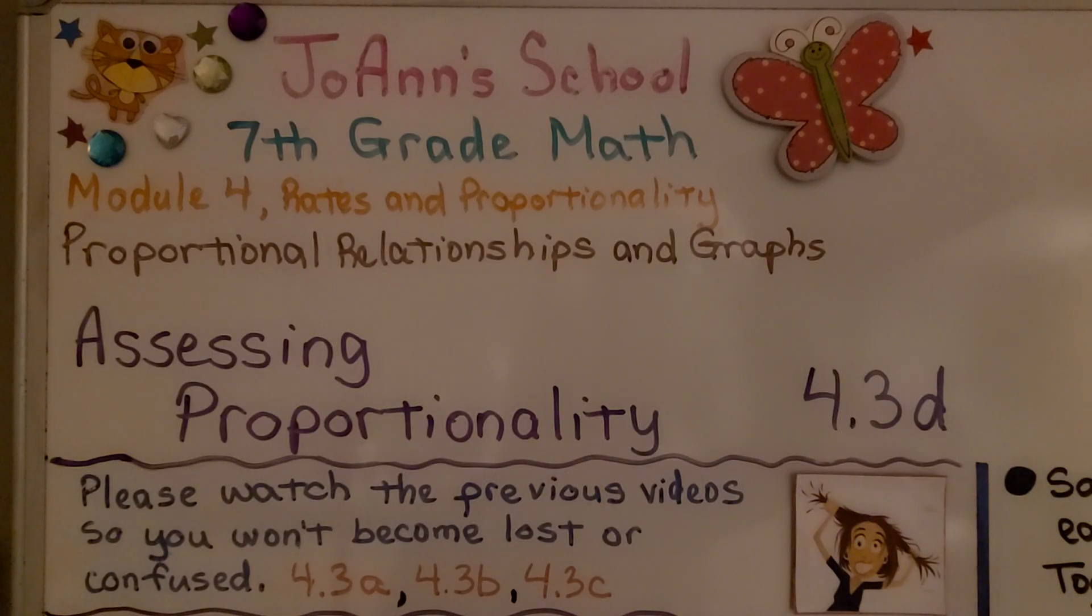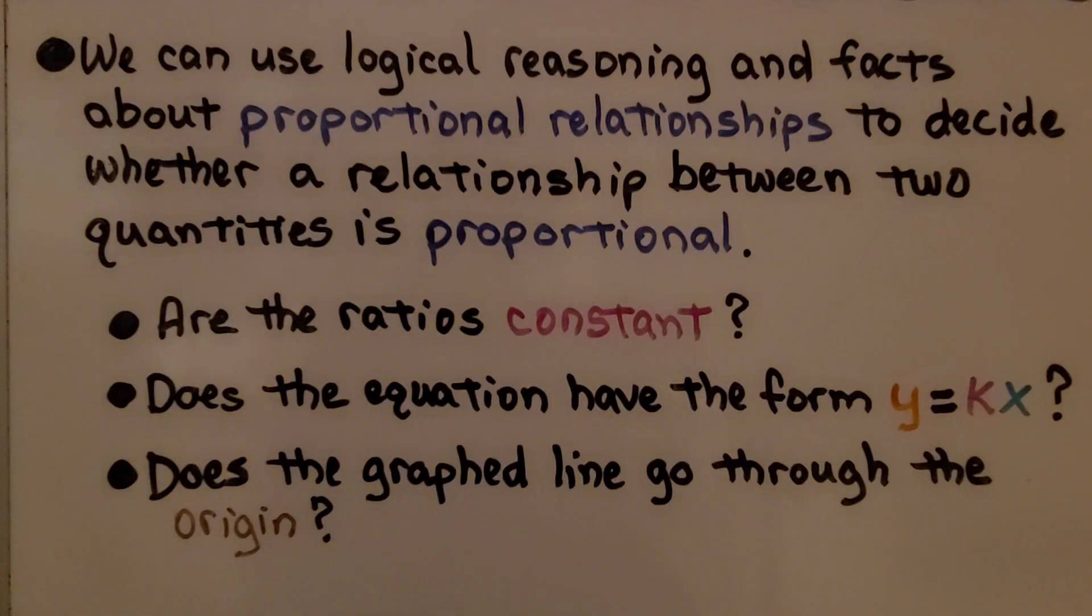We're at lesson 4.3d, Assessing Proportionality. We can use logical reasoning and facts about proportional relationships to decide whether a relationship between two quantities is proportional. Are the ratios constant? Does the equation have the form y equals kx? Does the graphed line go through the origin?